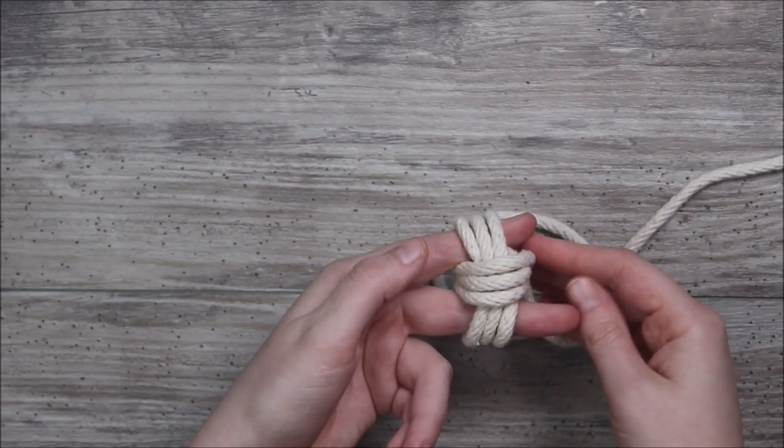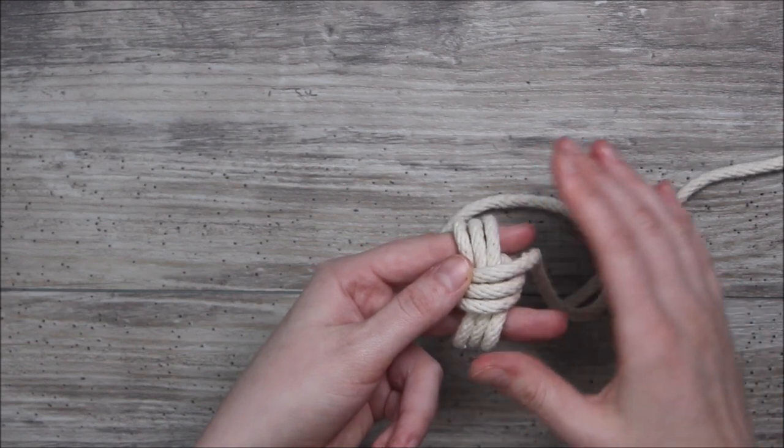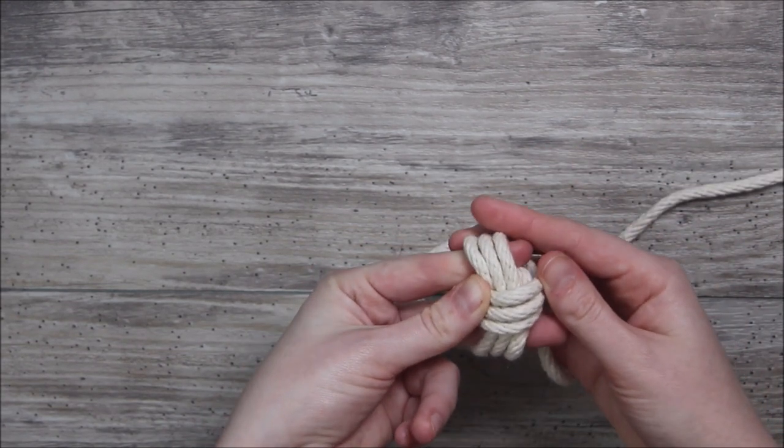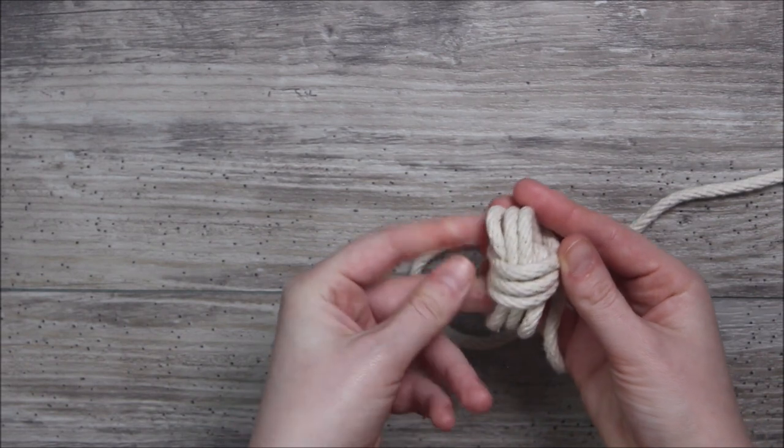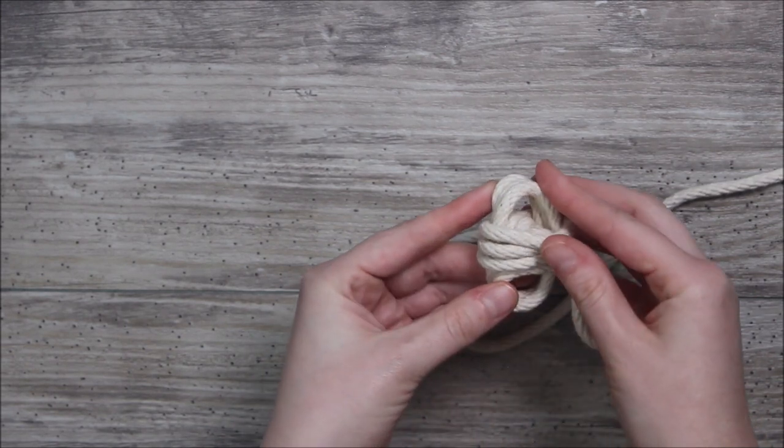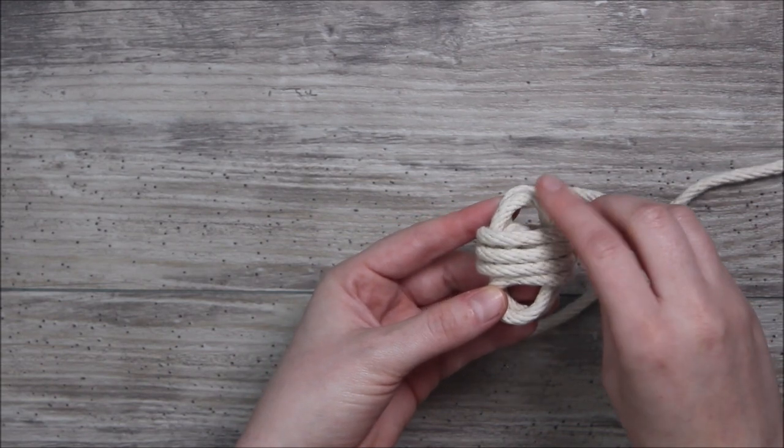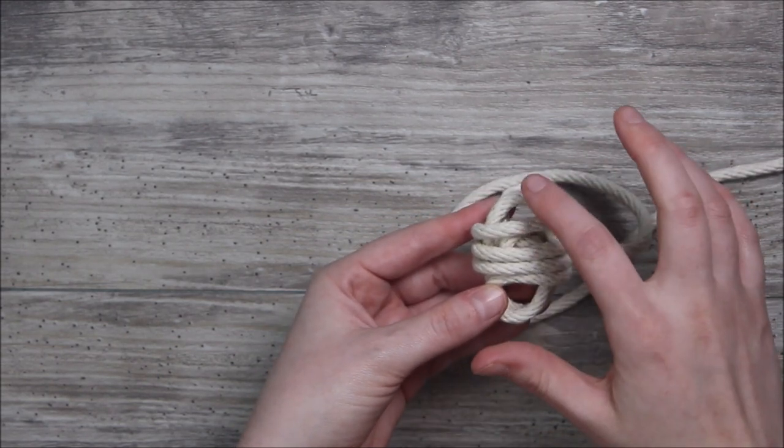At this point, we can actually remove the ropes from our fingers. This is maybe the trickiest part because you're going to want to keep everything together as best you can. Then kind of turn it on its side so you can see the two openings, the top and the bottom.